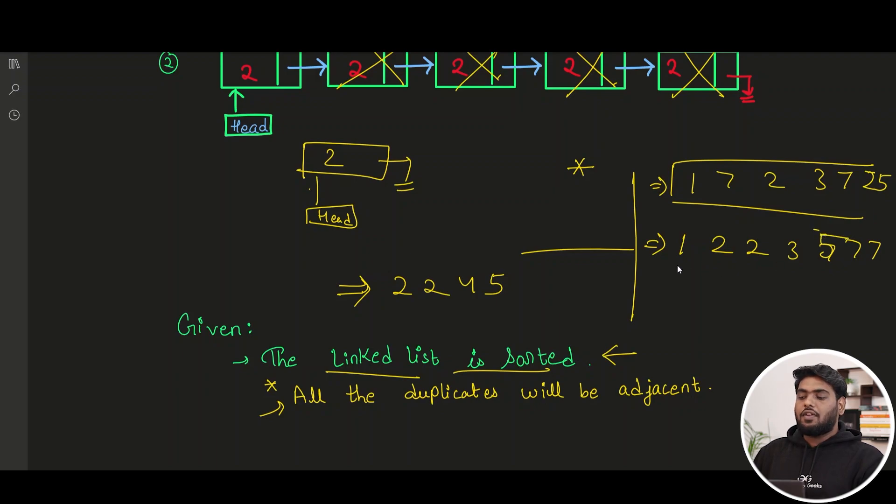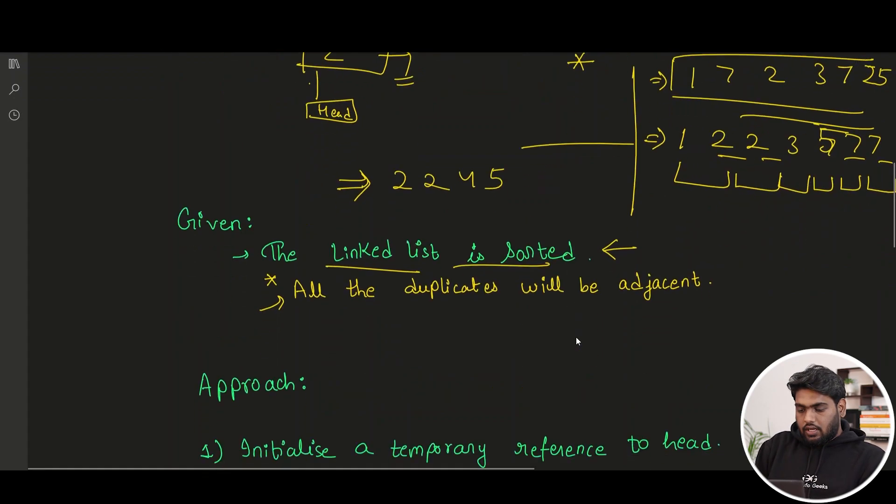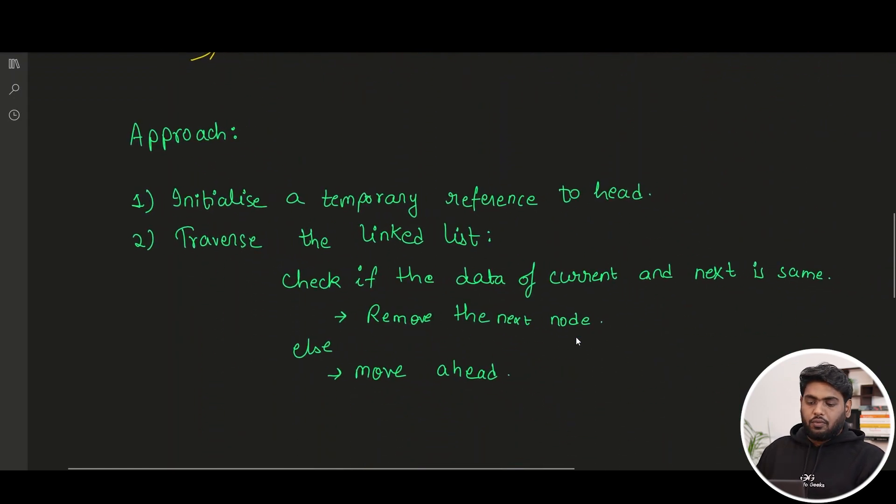So as you can see, when we are talking about a sorted combination, that means all the values that are getting repeated are adjacent. So we just have to check the next values. We do not need to care about all the others. We just need to check the next value from where we are standing, that's all. So let's see the approach of this question.